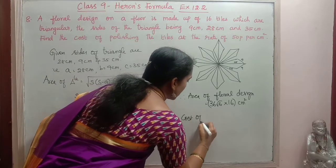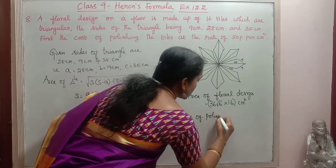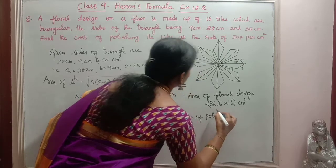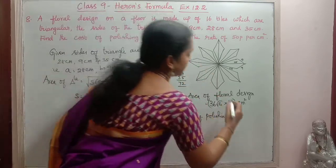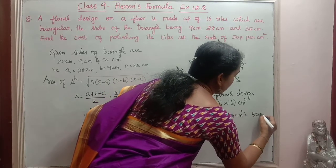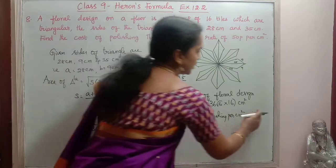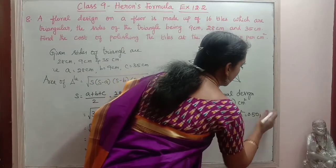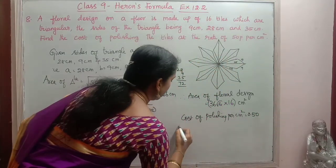Cost of polishing. Cost of polishing per centimeter square. Per centimeter square is equal to 50 paise. 0.50 we can say. 0.50.